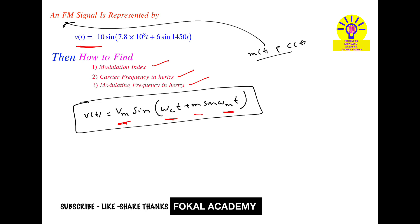The first question asks for the modulation index. m is called the modulation index. By comparing the standard equation with the given equation, we get that 6 is m. So m = 6, which is the modulation index for the given signal.